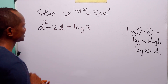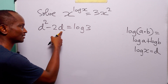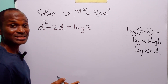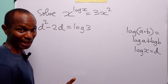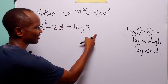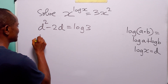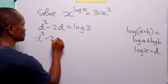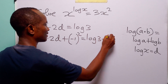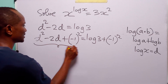Since the coefficient of d² is already 1, the next step is to add the square of half the coefficient of d to both sides. The coefficient of d is -2, and half of that is -1. So we add (-1)² to both the left and right hand sides to complete the square, giving us d² - 2d + (-1)² = log 3 + (-1)².